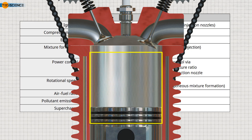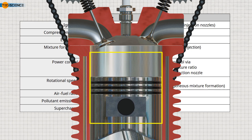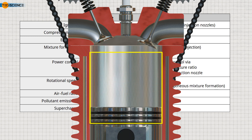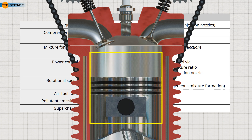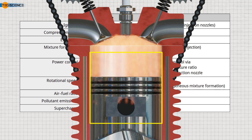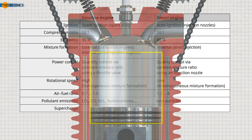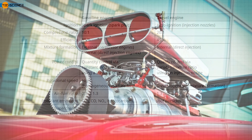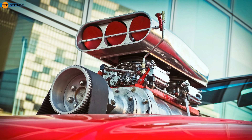Another way to increase engine power is to increase the amount of charge entering the cylinder. For a given displacement, the charge must be forced into the cylinder under pressure, so that more combustible charge enters the cylinder. This can be achieved, for example, by using compressors driven by the crankshaft.